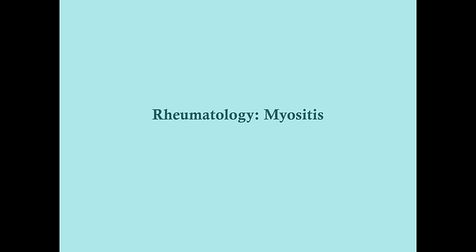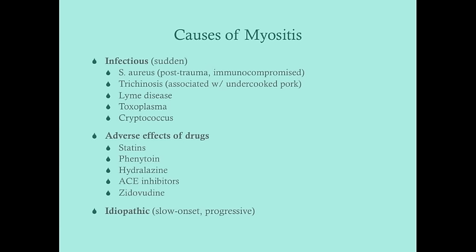We're going to talk about myositis, which has many different causes. We're only going to talk about one class. Other causes include infectious myositis, which is usually a sudden onset of muscle pain and weakness. Those include Staph aureus, which is a post-surgery or post-trauma cause in immunocompromised patients. Trichinosis is caused by Trichinella spiralis, associated with undercooked pork - we generally don't see this in the US. Lyme disease can have muscle pain and weakness in addition to joint pain.